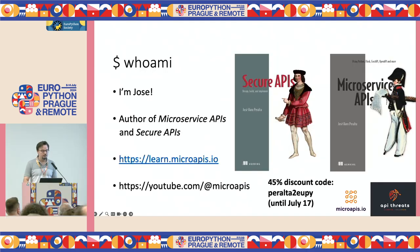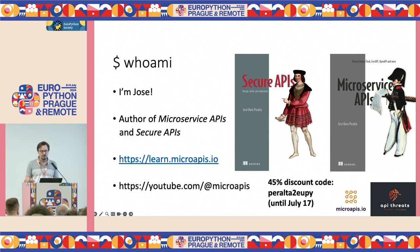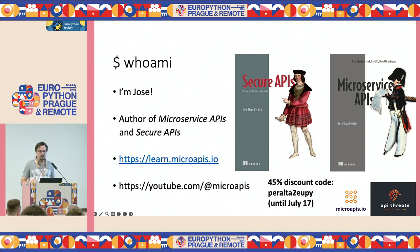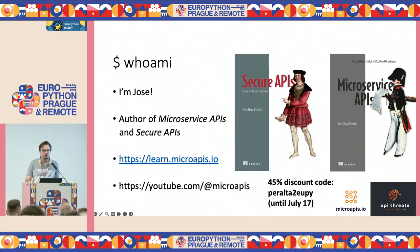Before jumping into the details, let me introduce myself. My name is Jose. I'm the author of two books. Microservice APIs was published in December 2022, and Secure APIs is coming up soon — I'm finishing chapter five right now. It's available on early access on manning.com. If you want to get a copy of any of these books, you can use this discount code to get a 45% discount. I was also able to get my publisher to give me 15 access codes — 10 for Secure APIs and 5 for Microservice APIs. I'm going to do a giveaway. Connect with me on LinkedIn or by email, let me know you're coming from this Python event, and I'll announce the winners in a few days.